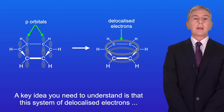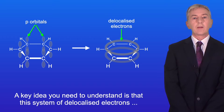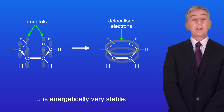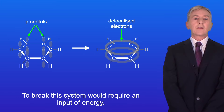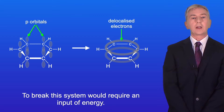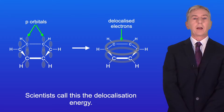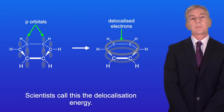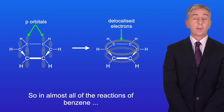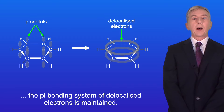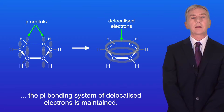A key idea you need to understand is that this system of delocalized electrons is energetically very stable. To break this system would require an input of energy, and scientists call this the delocalization energy. So in almost all of the reactions of benzene, the pi bonding system of delocalized electrons is maintained.